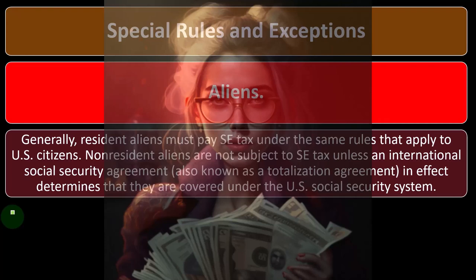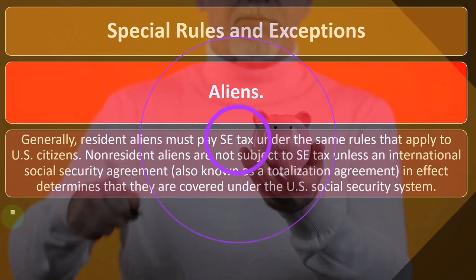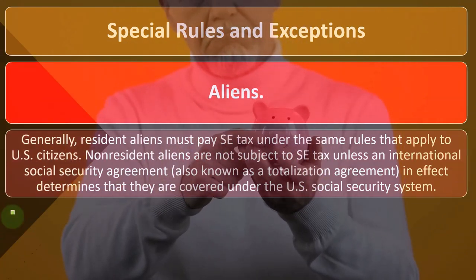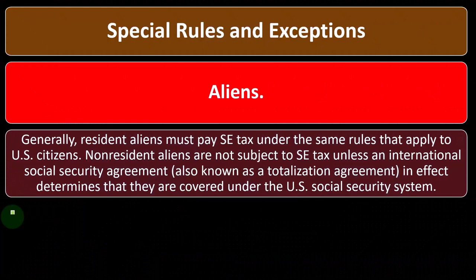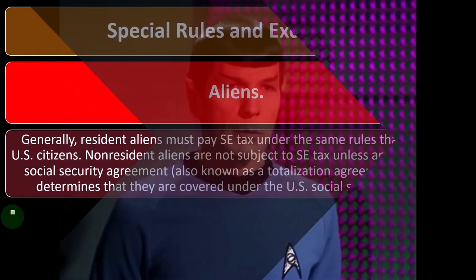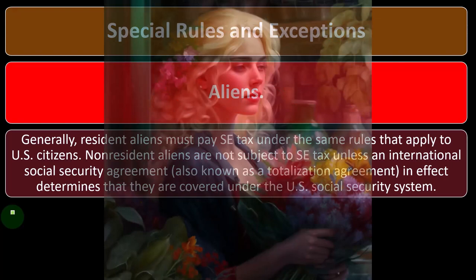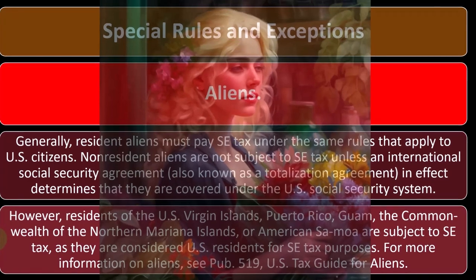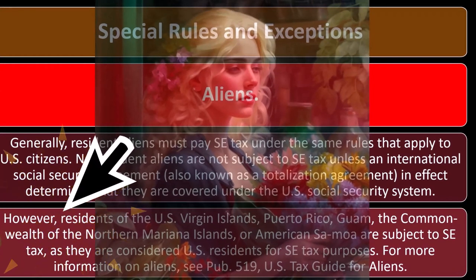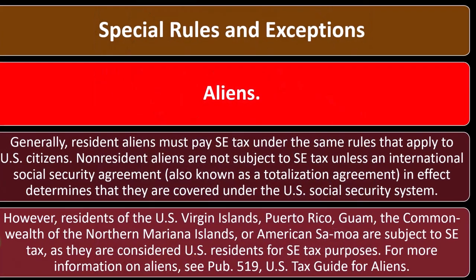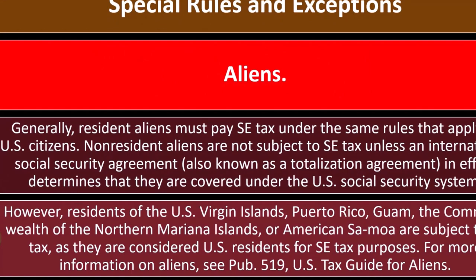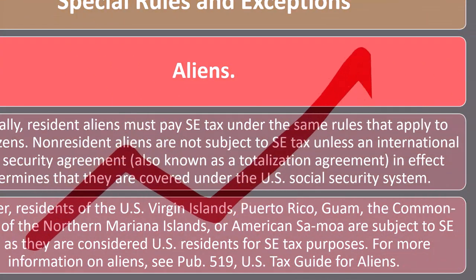If you asked a US citizen whether they'd like to put money into the social security system for their own retirement, most people would probably say no, given that the social security system looks like it's heading toward a cliff at some point. The rationale for alien exemptions is that it doesn't make sense to force someone to contribute to a retirement plan they can't benefit from. However, residents of the US Virgin Islands, Puerto Rico, Guam, the Commonwealth of Northern Mariana Islands, and American Samoa are subject to SE tax as they are considered US residents for SE tax purposes.